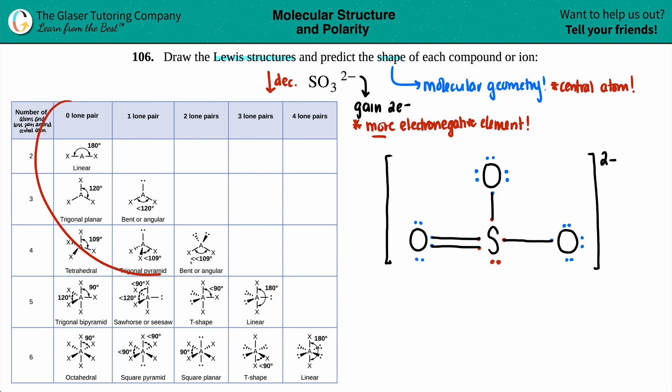Now in order to use this chart, which you might have to memorize depending on if your teacher or professor is not going to give you this information on a test or quiz, you just have to basically know how many total atoms and how many total lone pairs are around that central atom. So in this case, we'll highlight the sulfur because that's who's in question here. And how many atoms are around sulfur? Well, all three of these oxygens—one, two, three—they all have a direct bond to the central atom, the sulfur. So we got three atoms.